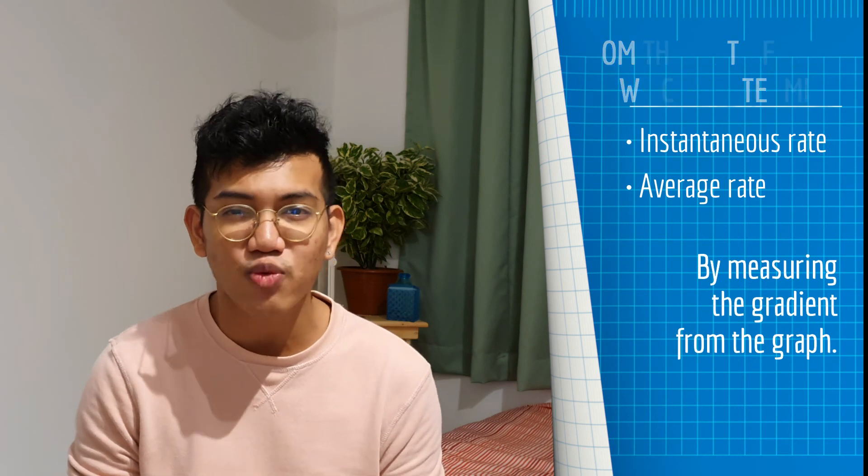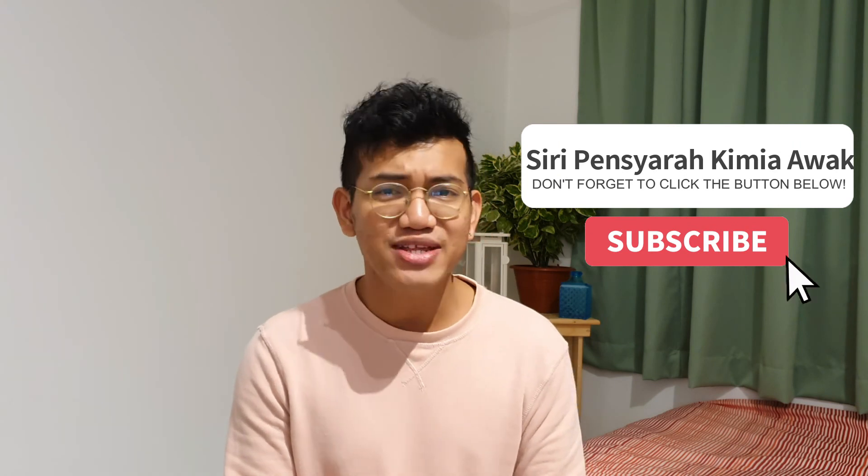In a nutshell, the rate of reaction can be calculated if we have a set of data. From this set of data, we can plot a graph from which we can determine the instantaneous rate of reaction and the average rate of reaction. To do this, we have to measure the gradient of the curve that we plotted. I hope you find this video beneficial. If you do, please give this video a like, share it, and subscribe to the channel if you haven't done so already. That's all from me — Mr. Azlan signing out. Bye!